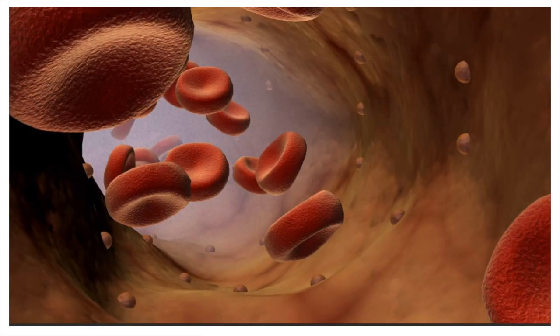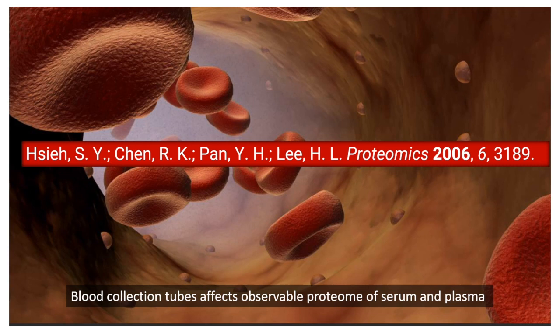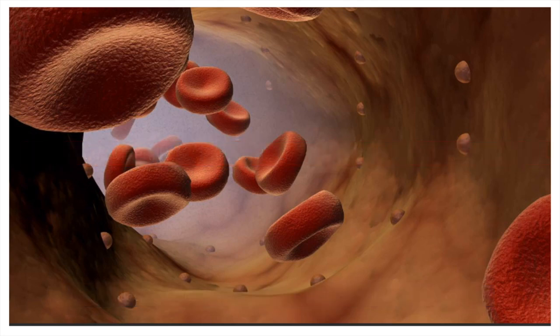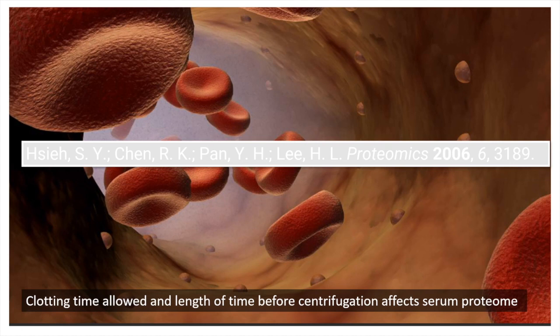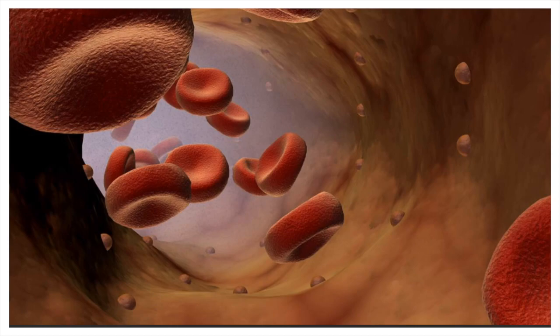So at the molecular level, what is the difference between serum and plasma? A recent study by Hash et al. showed that using different blood collection tubes affects the observable proteome — meaning the entire set of proteins that is observed. Other factors include the clotting time allowed, the coagulant used, and the length of time that elapses between the blood being clotted and then it being centrifuged.